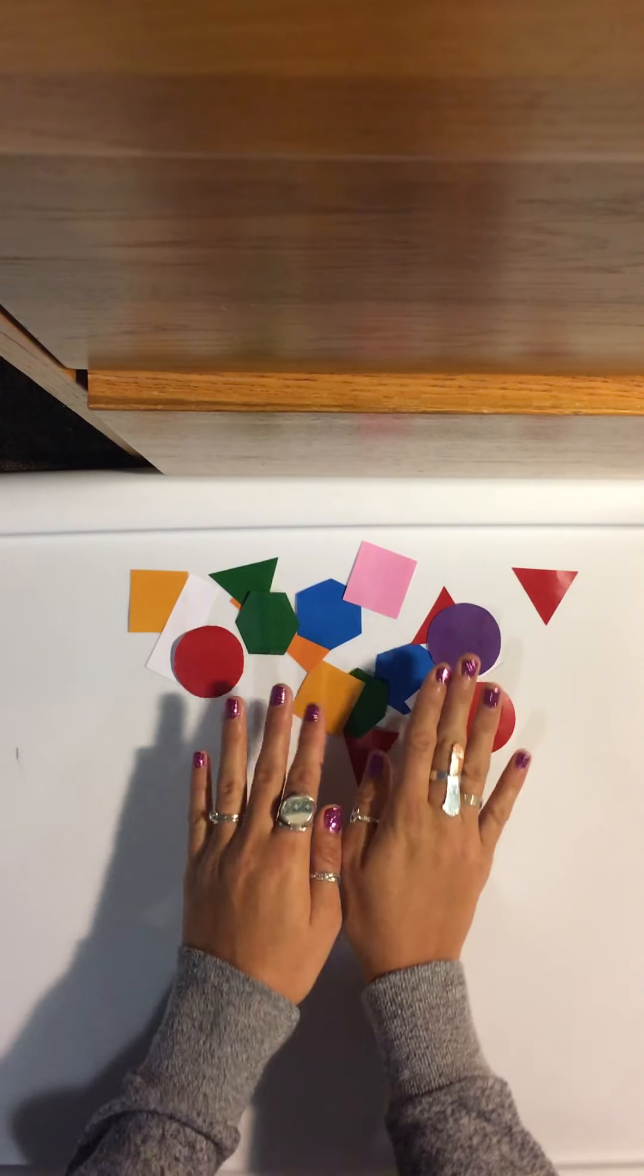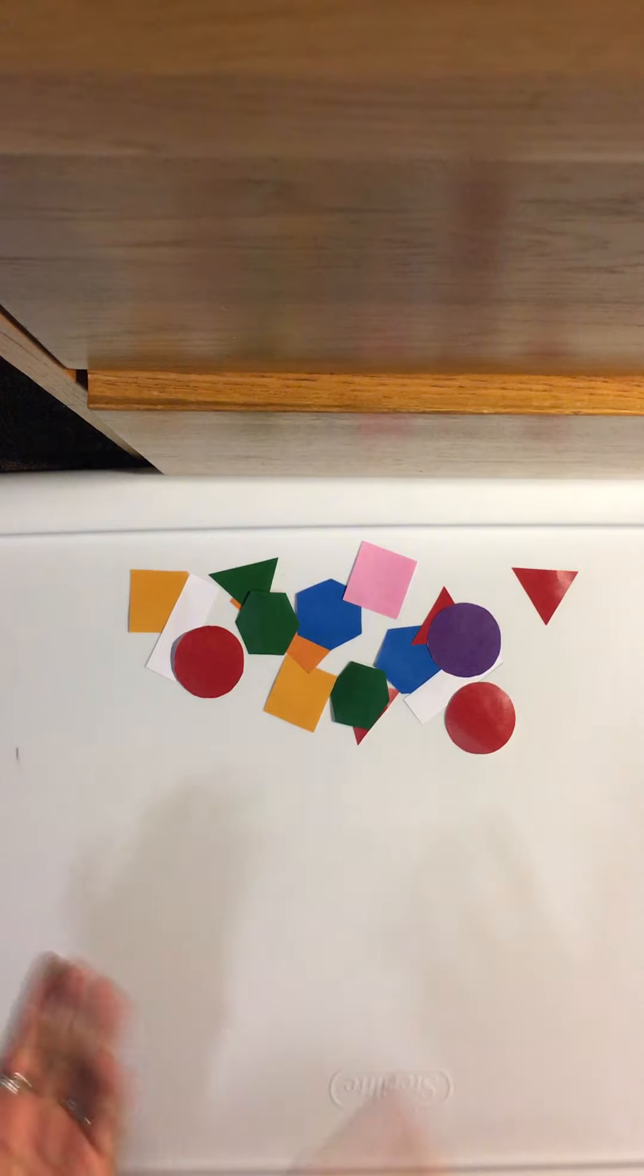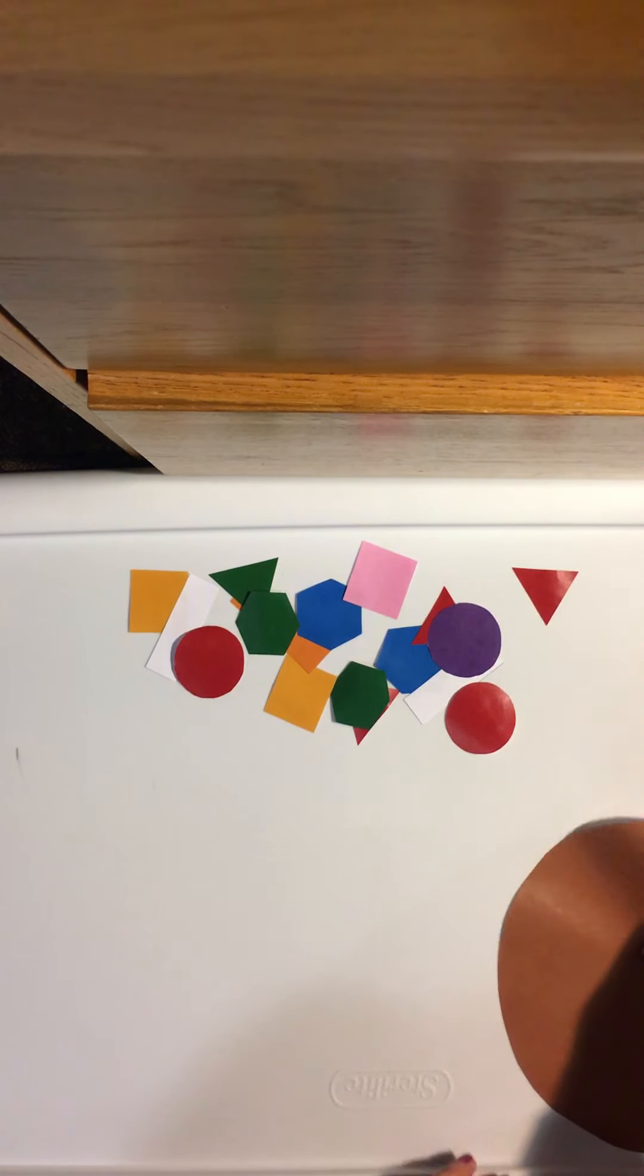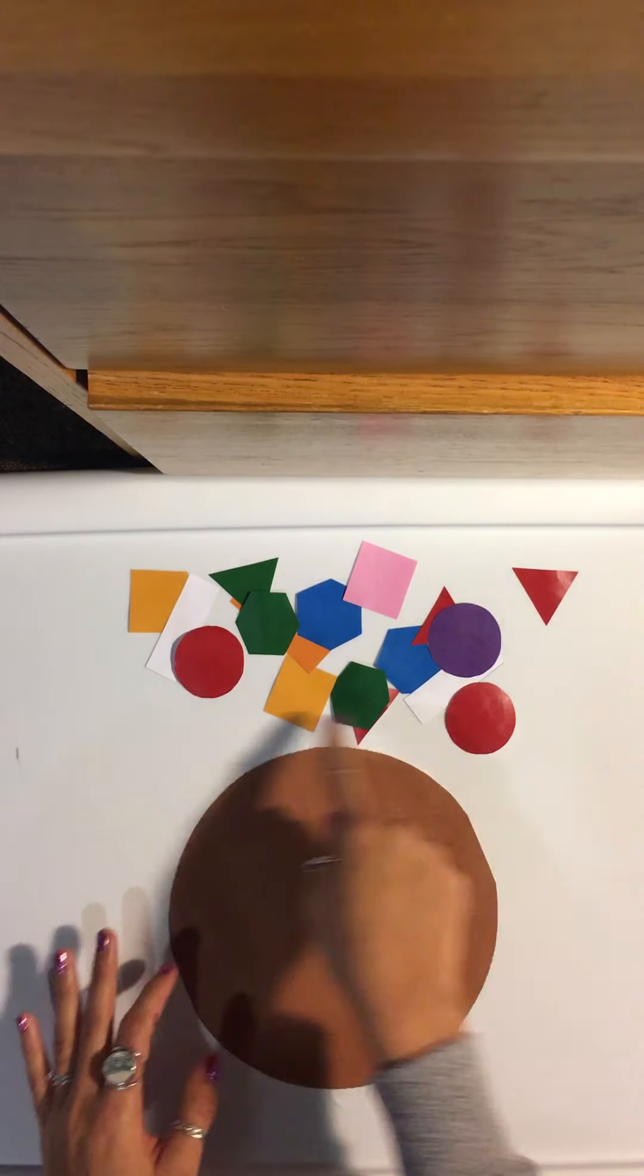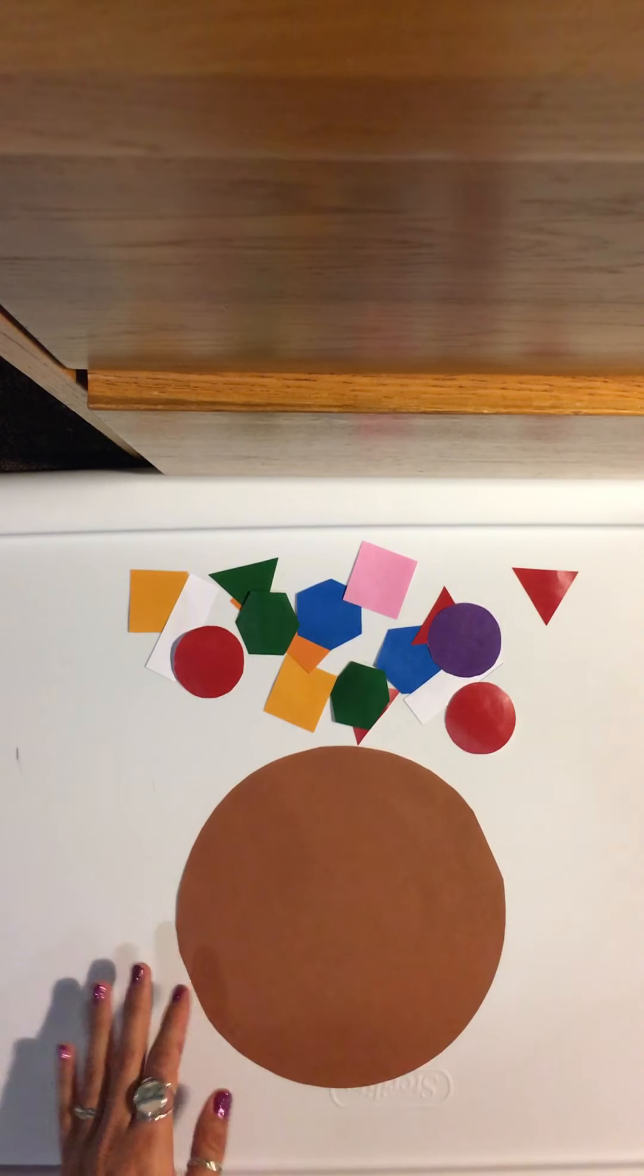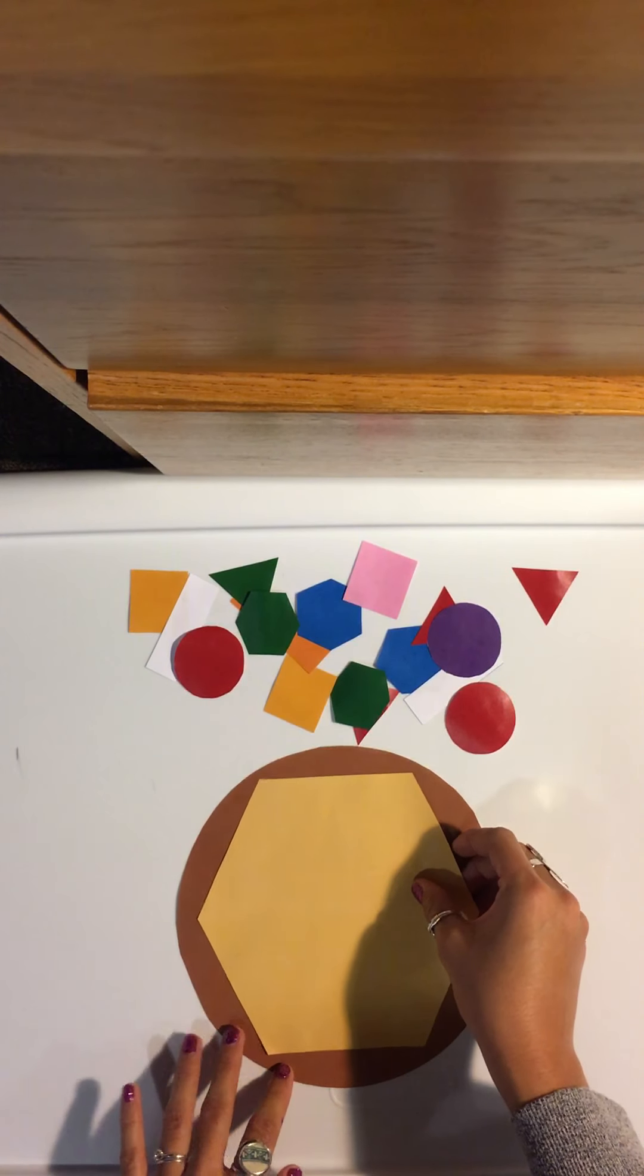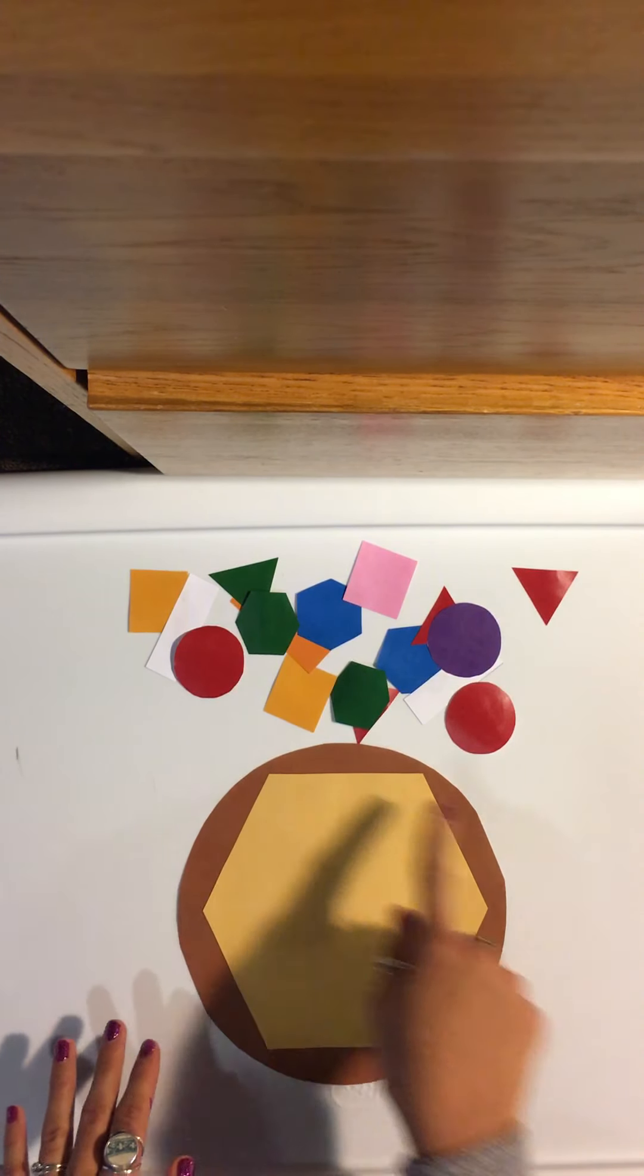So we're going to put our toppings there. And then we're going to grab our dough. That's how you make a pizza, right? You need your dough. So we're going to grab our dough. Our dough is a big circle. And then we're going to grab our cheese. We need cheese on our pizza, right? Cheese is yummy. So we have our hexagon cheese.